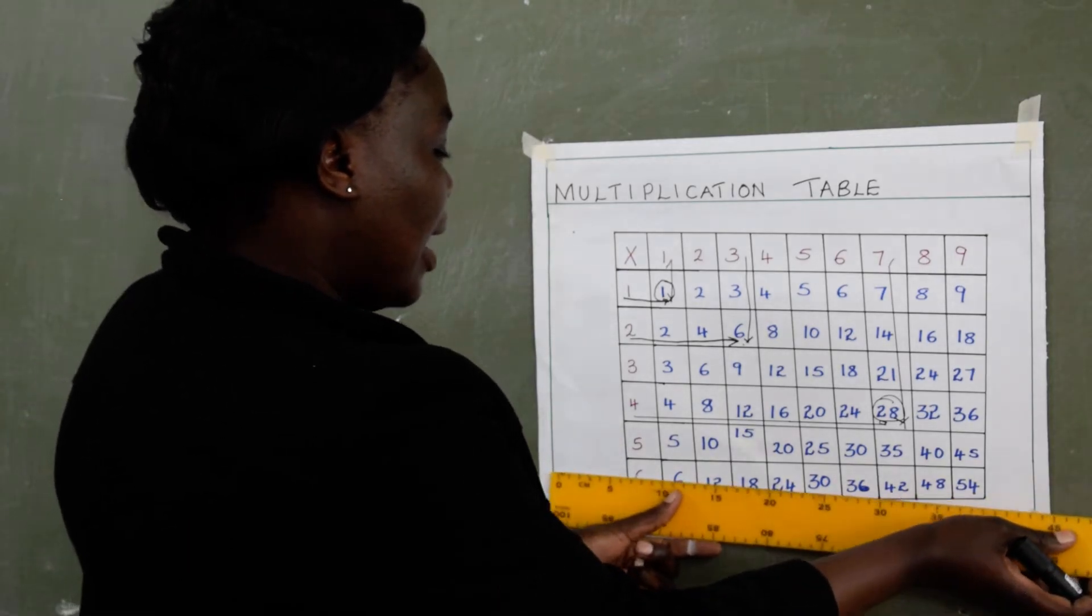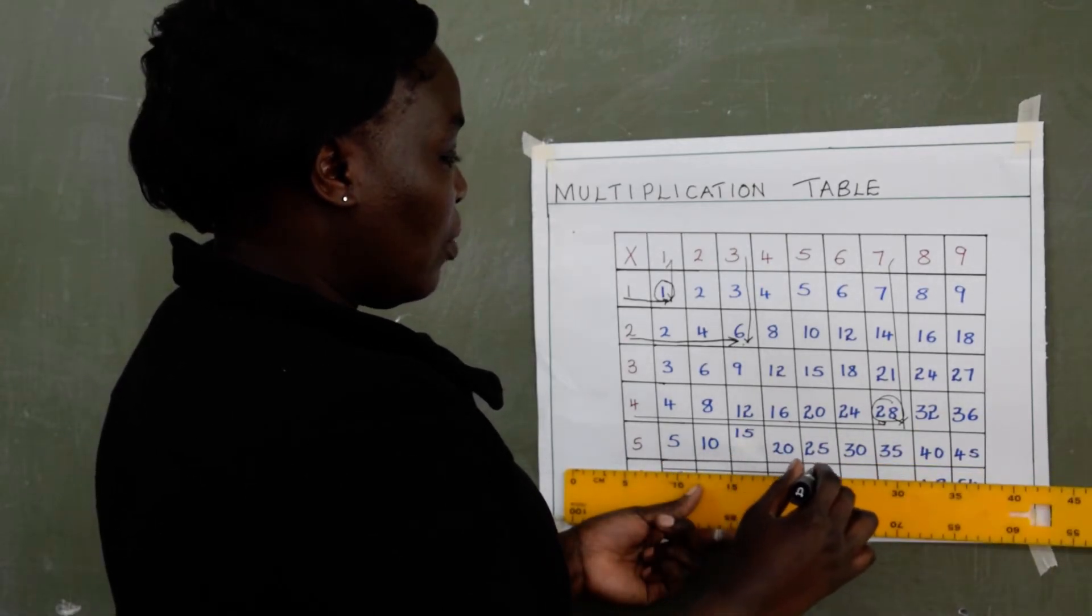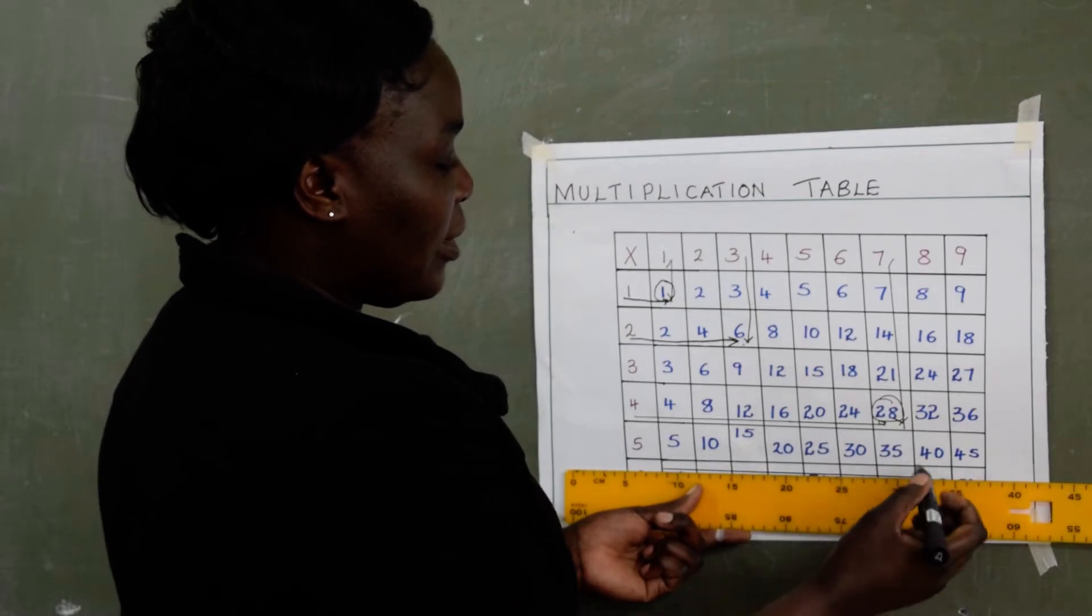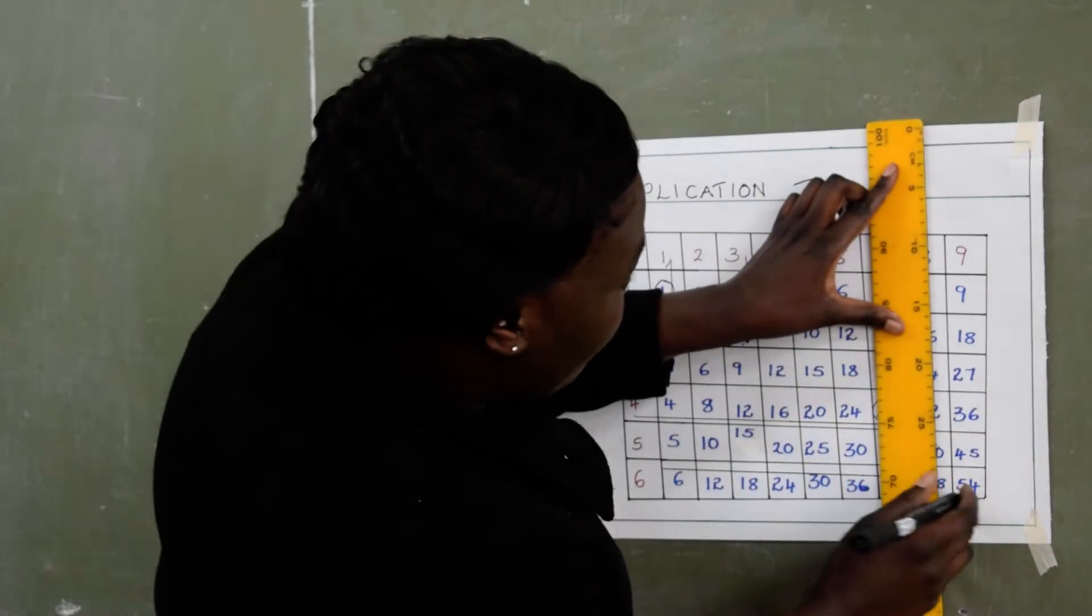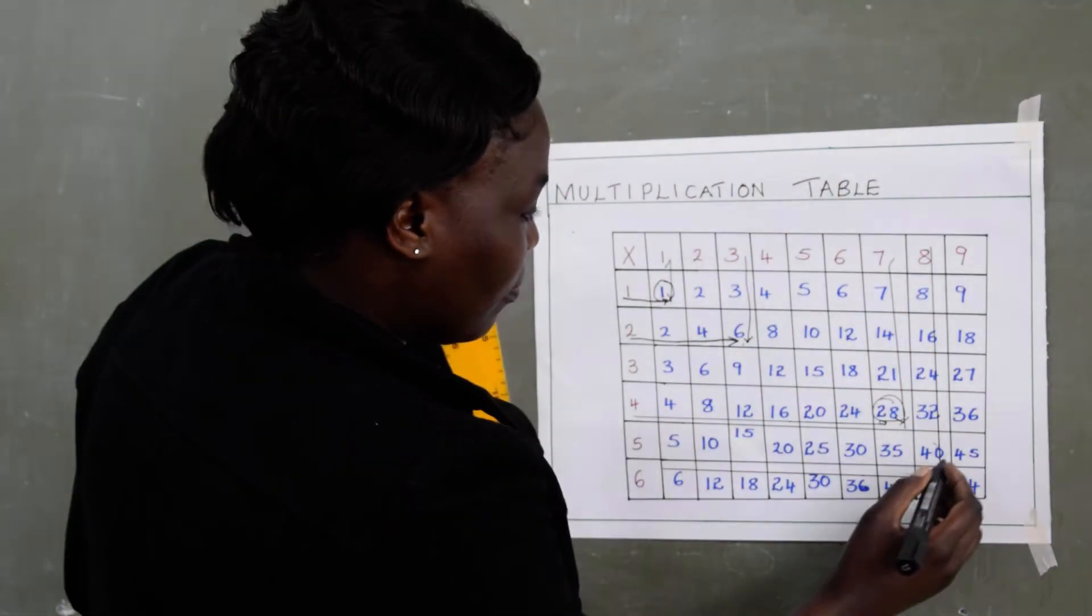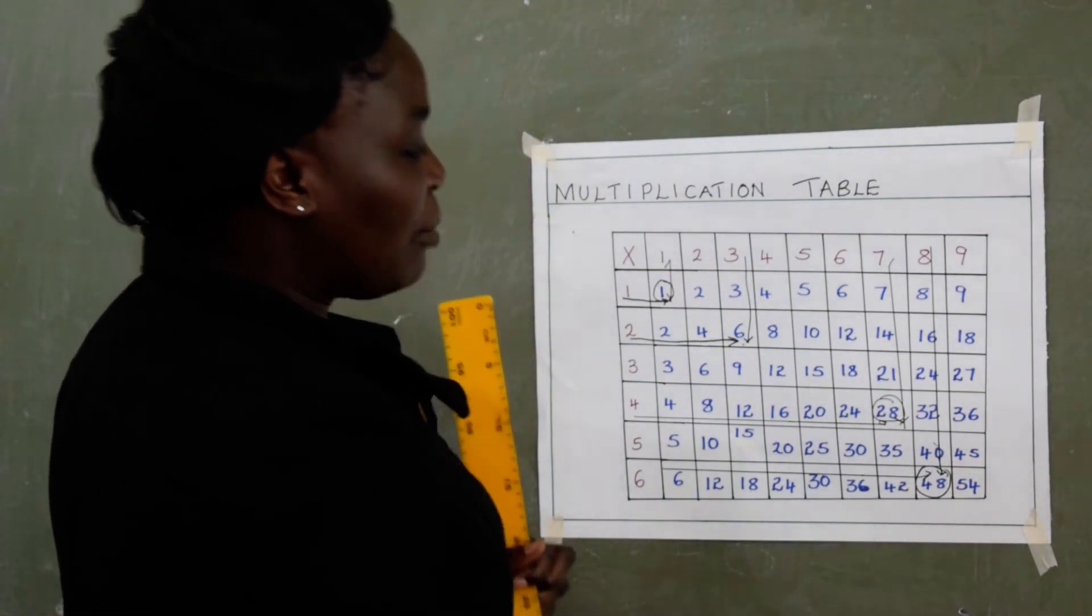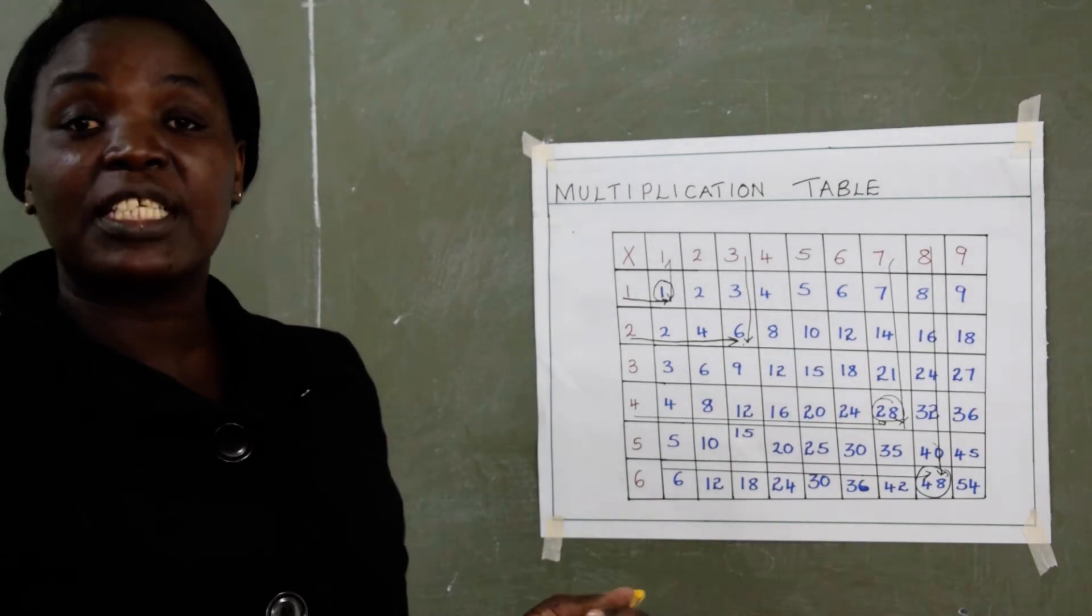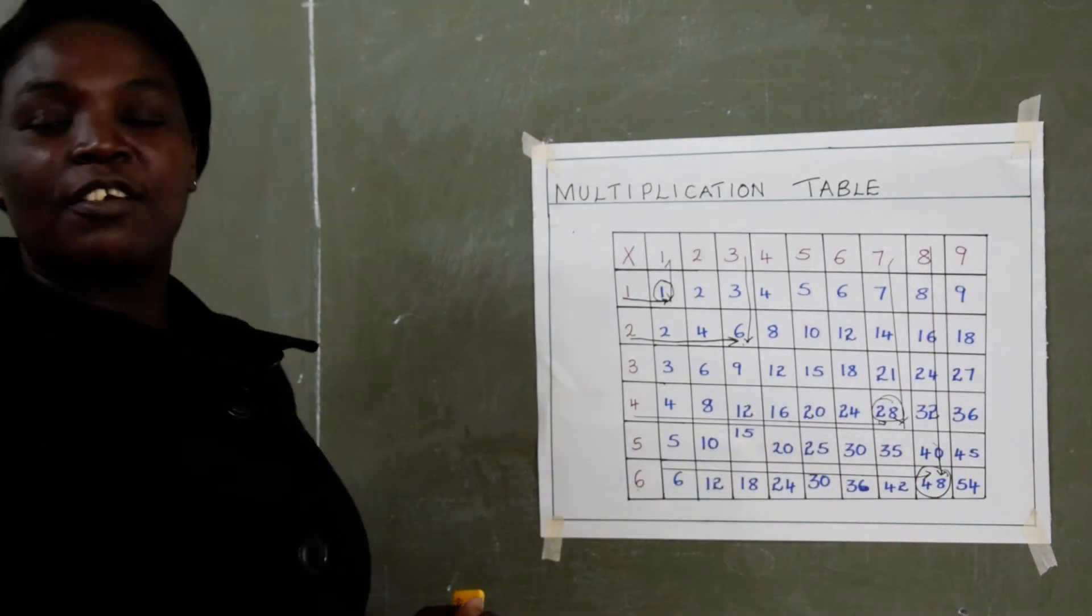I will draw a line. So 6 is here. Then we will look for where 8 is there. Then we draw another line from number 8 up to where 6 is. And they are meeting in the box which has number 48. So that means 6 times 8 gives us 48.